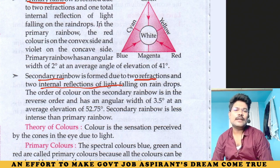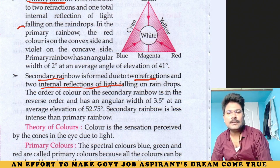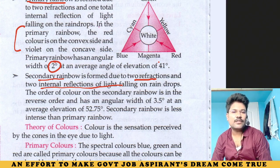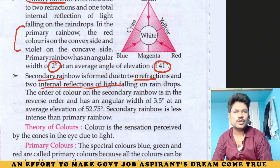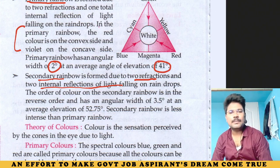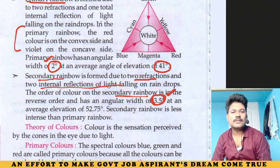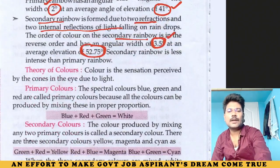Primary rainbow has an angular width of two degrees. The average angle of elevation is forty-one degrees. Secondary rainbow is in reverse order and has an angular width of three point five degrees. The angle of elevation for the secondary rainbow is fifty-two point seven five degrees, whereas for the primary rainbow it is forty-one degrees.